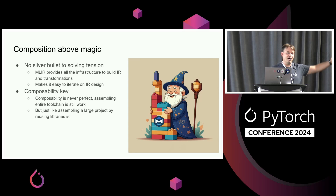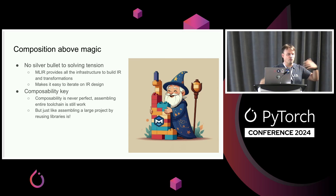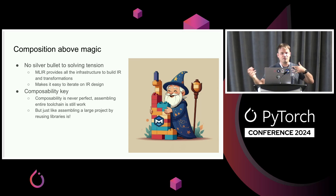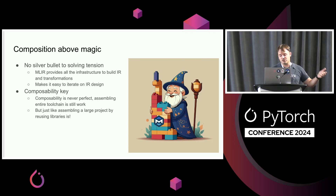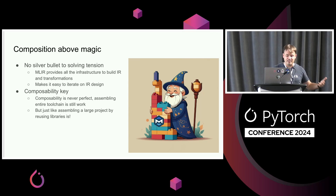There's no silver bullet to solving this tension — should we use libraries, what should we use, where, to what extent, how much human versus automatic? MLIR provides all the infrastructure to build IR and transformations, and it makes it easy to iterate on IR design and try different things out, but composability is still the key. There's a big human design component to it.